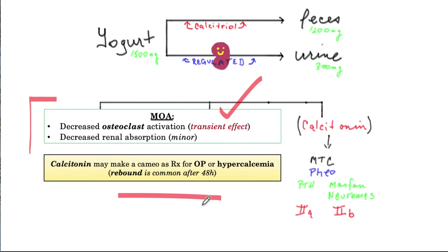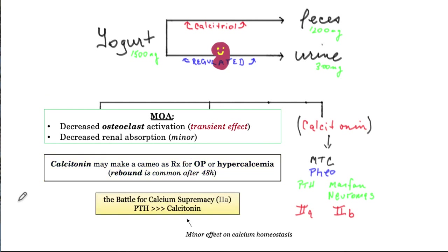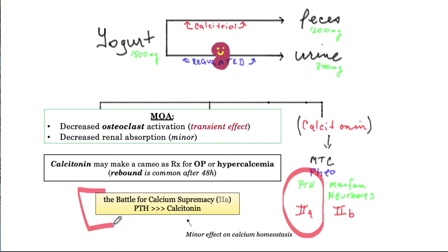Historically, calcitonin was used for management of osteoporosis, but it was only a minimally effective agent. A common student question in MEN 2A syndromes: you have hyperparathyroidism and high calcitonin levels — so what do you see? High serum calcium or low? The answer is hypercalcemia. The effect of PTH far outweighs that of calcitonin, so in MEN 2A with medullary thyroid carcinoma elaborating calcitonin versus hyperparathyroidism, hyperparathyroidism trumps and we see hypercalcemia.